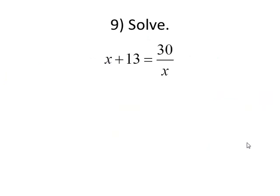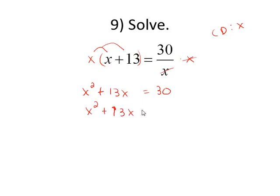One last problem here. This is a quadratic in hiding. It doesn't look quadratic, but it's a rational equation. I have a denominator of x that I'd like to clear. The only denominator is x, so that is our common denominator. I'm going to multiply both sides of the equation by x. On the left-hand side, I distribute x to get x squared plus 13x. On the right side, the x's will cancel to equal 30. Subtract the 30 over to get this in standard form.